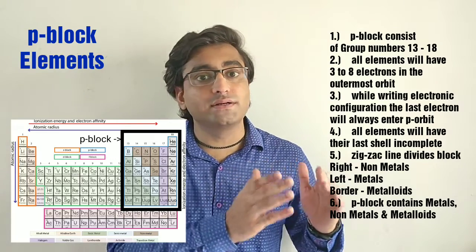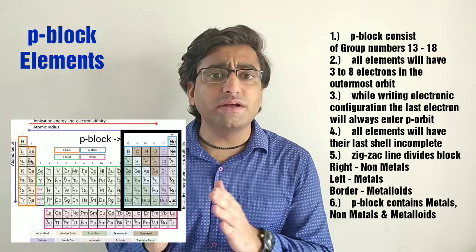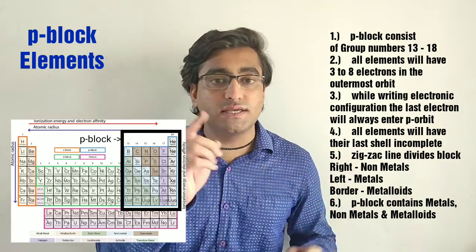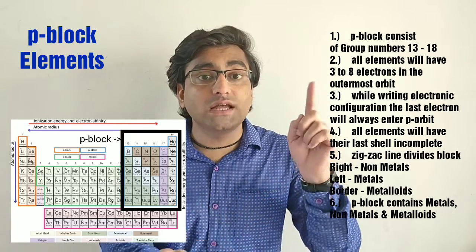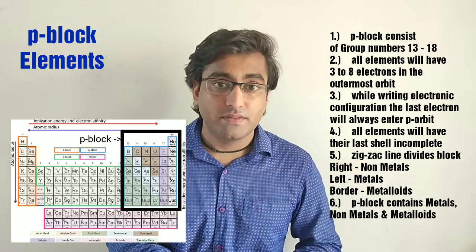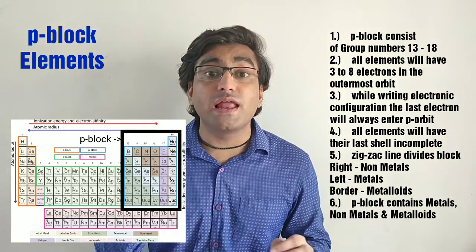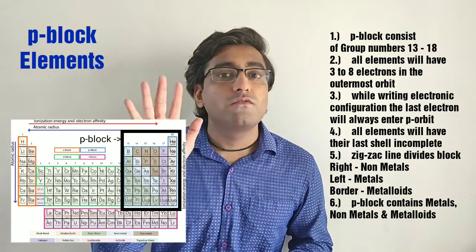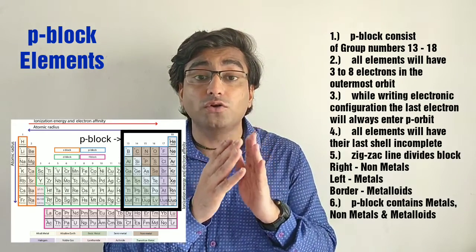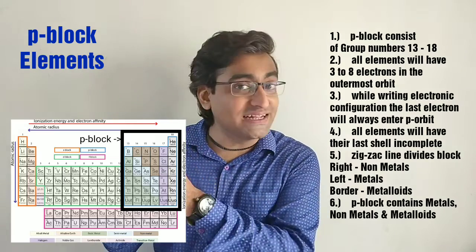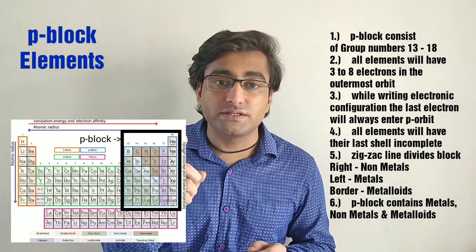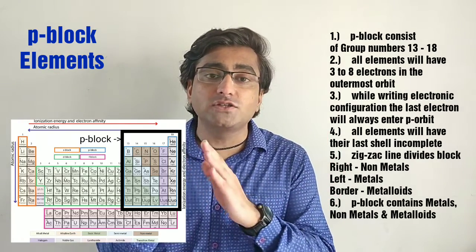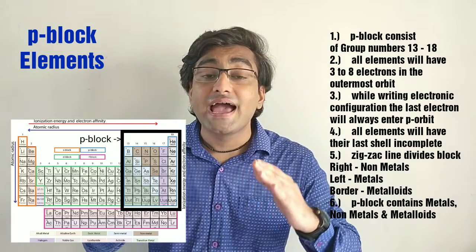Now let us learn the characteristics of P block. Point 1, P block consists of group numbers 13 to 18. Point 2, all elements in the P block have 3 to 8 electrons in their outermost orbit. Point 3, the last electron always enters the P orbit. Point 4, all P block elements have their last shell incomplete. Point 5, the zigzag line present in the block divides it into two parts — metals on the left and non-metals on the right, with metalloids on the border. Point 6, the P block contains all 3 types of elements: metals, non-metals and metalloids.